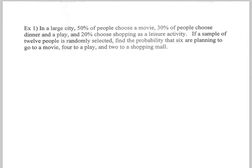First example, they give us the probability that people are going to choose all these things. We're looking at twelve people, so there's my n. There's three things they could do: movie, play, mall. Well, the number of people that we want to go to the play, the movie, and the shopping mall is given to us.